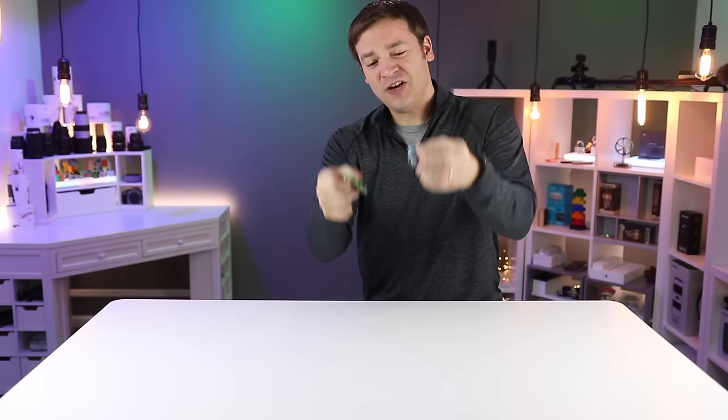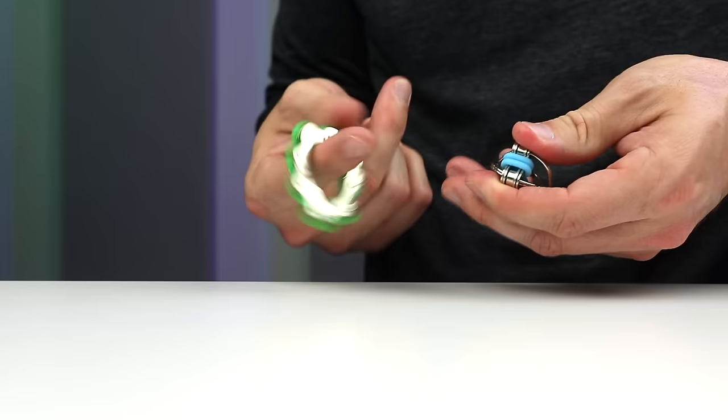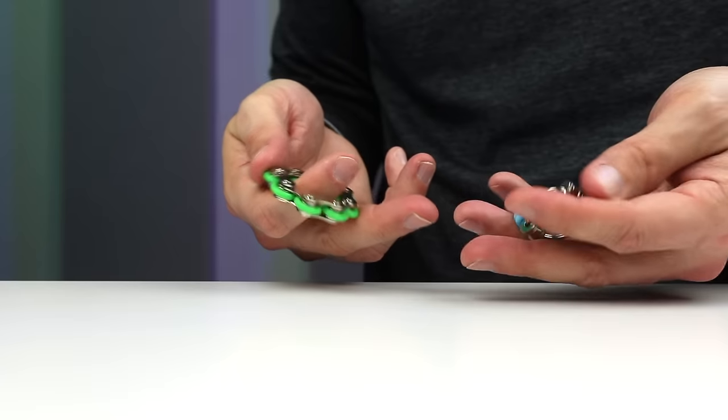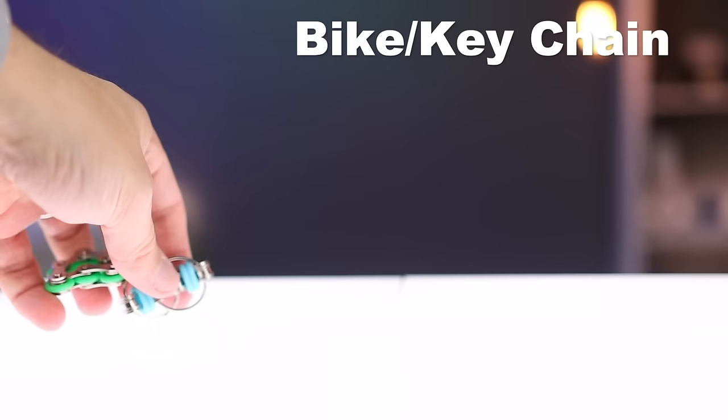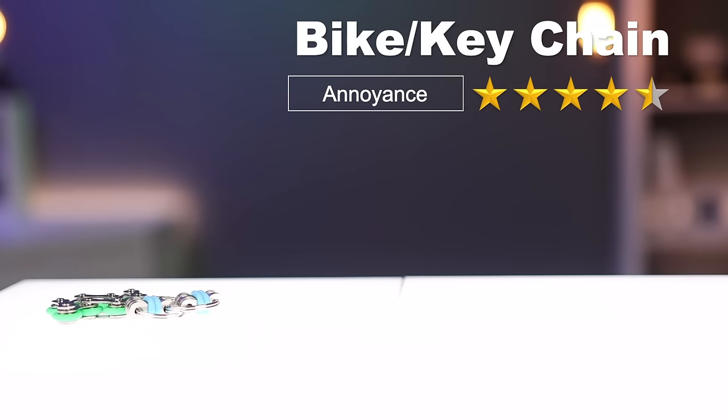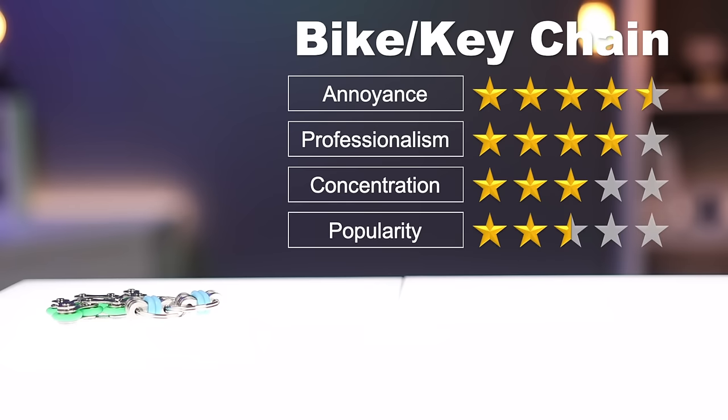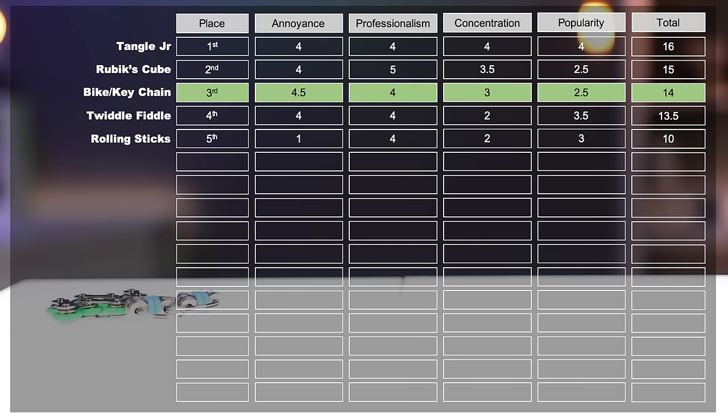The bike chain and key chain fidget toys are very simple and they're easy to use. You just roll them around or flip them around in your hands as you use them and concentrate and they're fairly quiet. And because of this, they get four and a half stars for annoyance, four stars for professionalism, three stars for concentration and two and a half stars for popularity, putting it right in the middle of the pack.